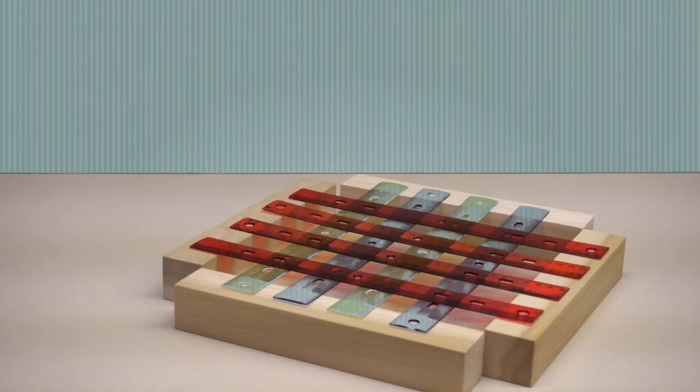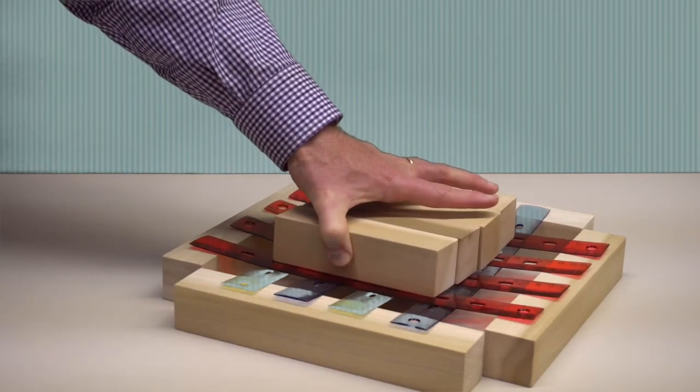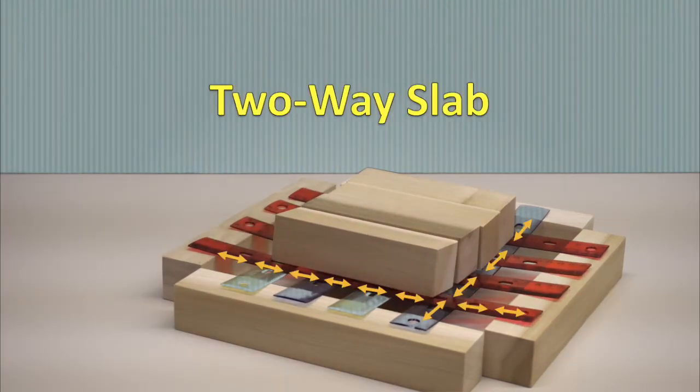If the supports cause the plate to curve in both directions, we have a two-way slab. Carrying of the load is then shared by stresses in the two directions, and deflection is reduced.